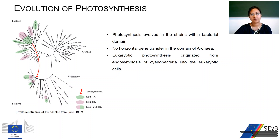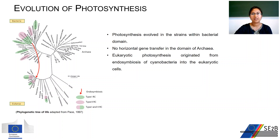The evolution of photosynthesis is complex because it involves different classes of organisms, and different parts of the photosynthetic apparatus have different evolutionary paths. Looking at the evolutionary tree of life, we can see three fundamental domains of living organisms: bacteria, archaea, and eukarya, a division based on small subunit RNA. Photosynthesis is mainly restricted to bacteria and eukarya. Scientific evidence suggests photosynthesis first originated in bacteria, then entered eukaryotes by endosymbiosis of a cyanobacteria-like organism, which ultimately became chloroplasts. This presentation is mainly focused on the bacterial domain.